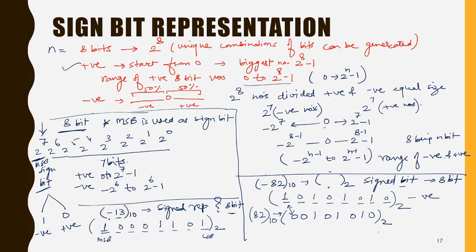Based on what is given in the question, the first method we have seen is how to convert a negative number into a sign bit representation. If asked how to reverse-convert, you will get a particular number written as a signed bit representation. This is an important thing to remember.